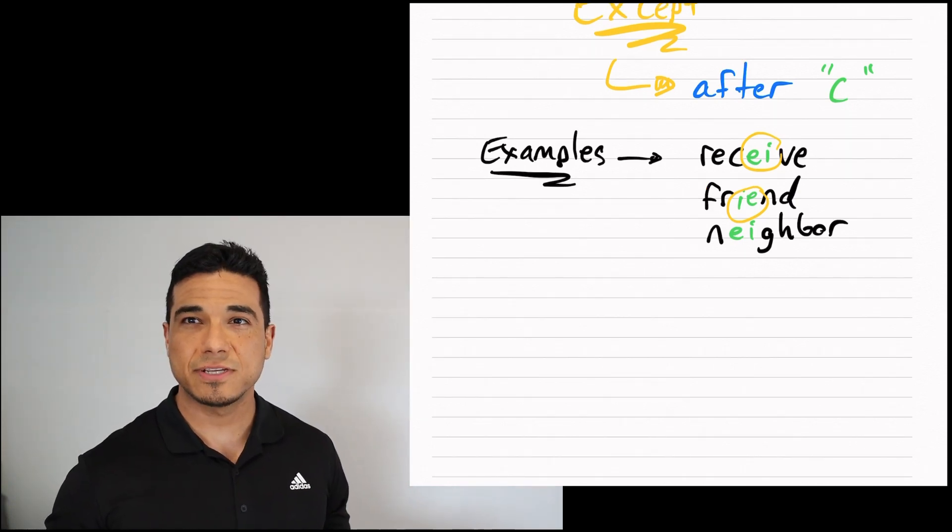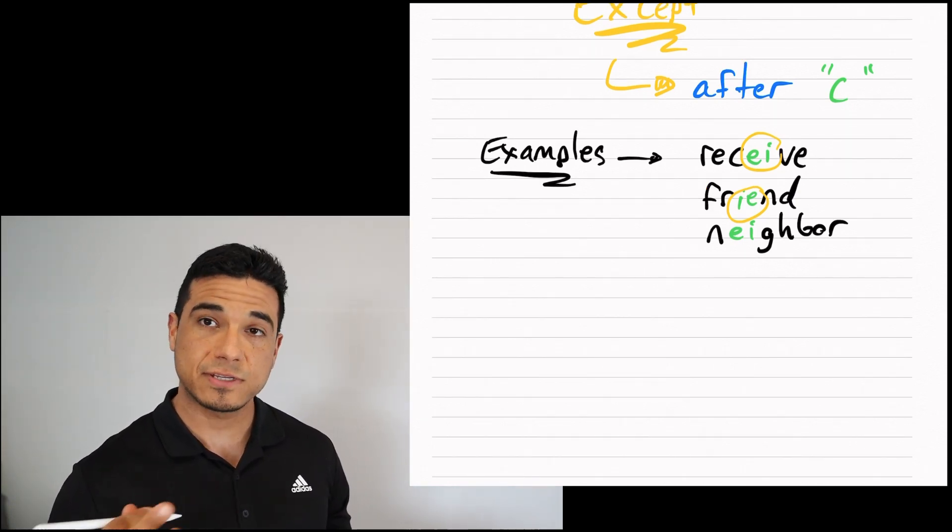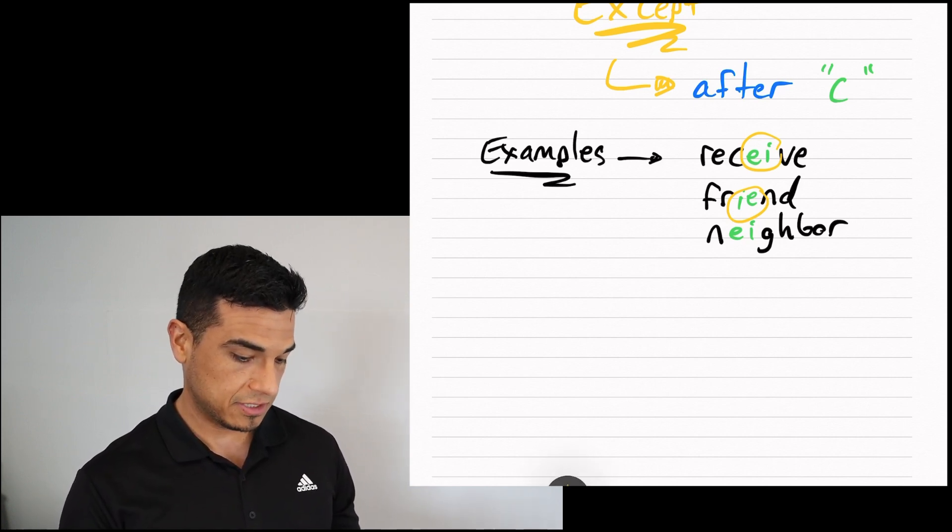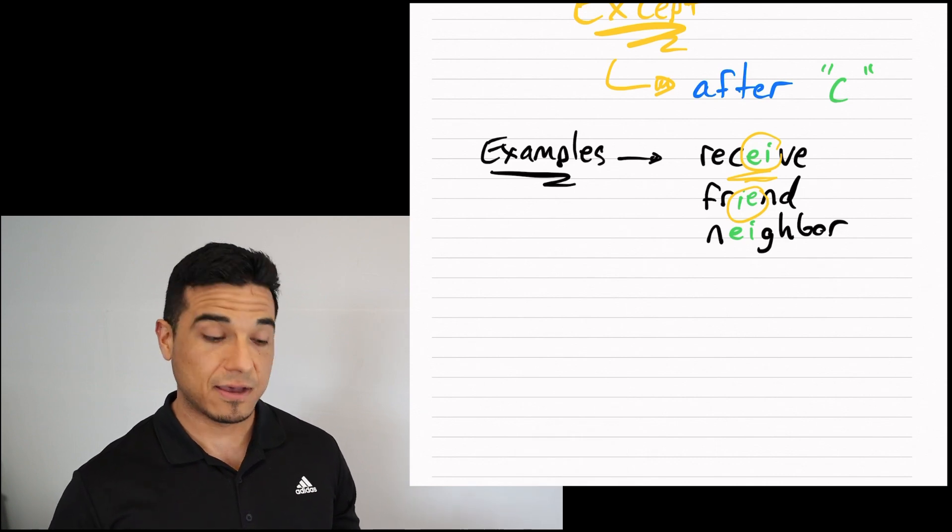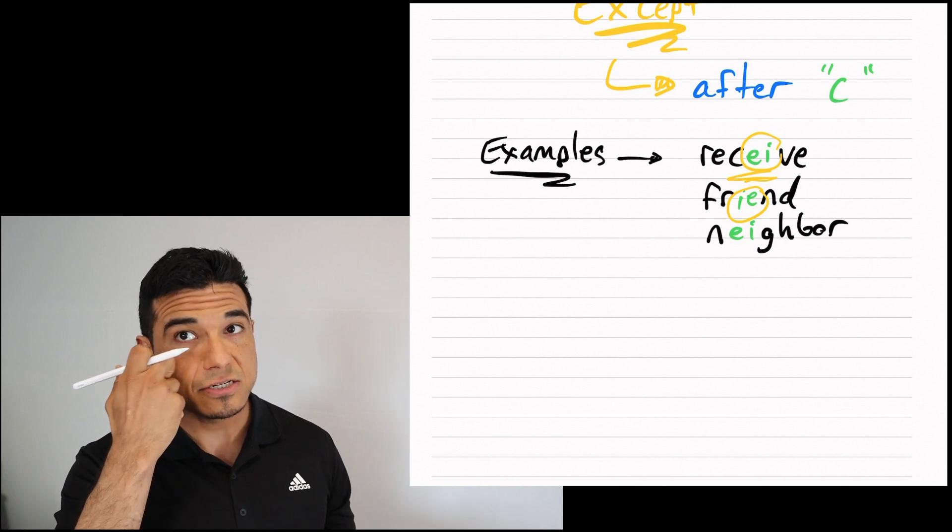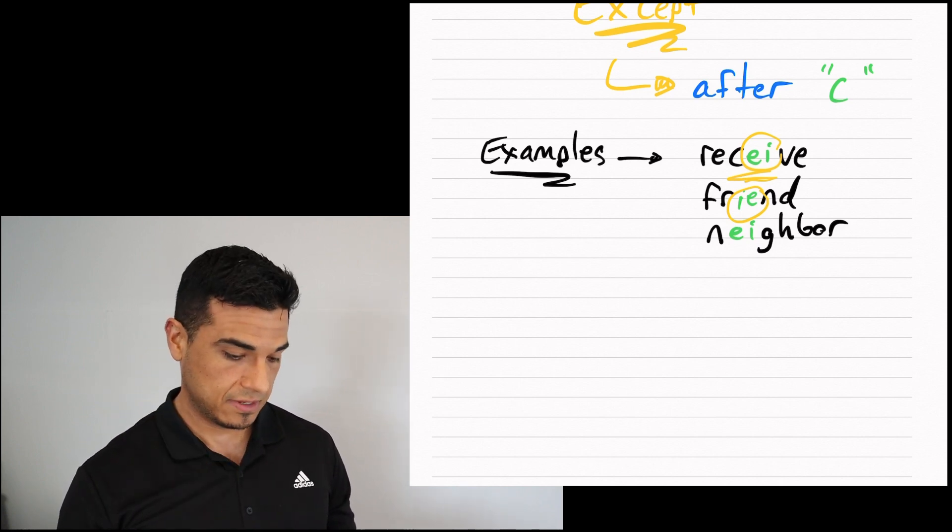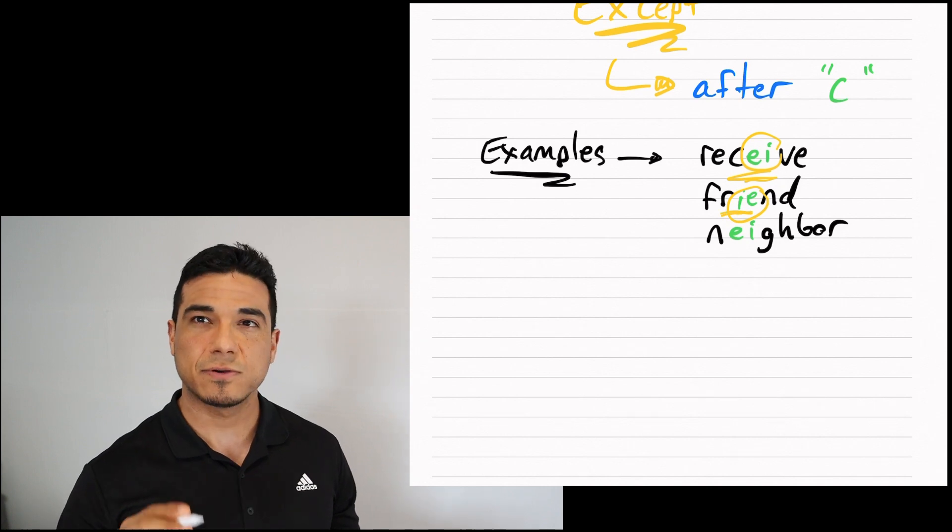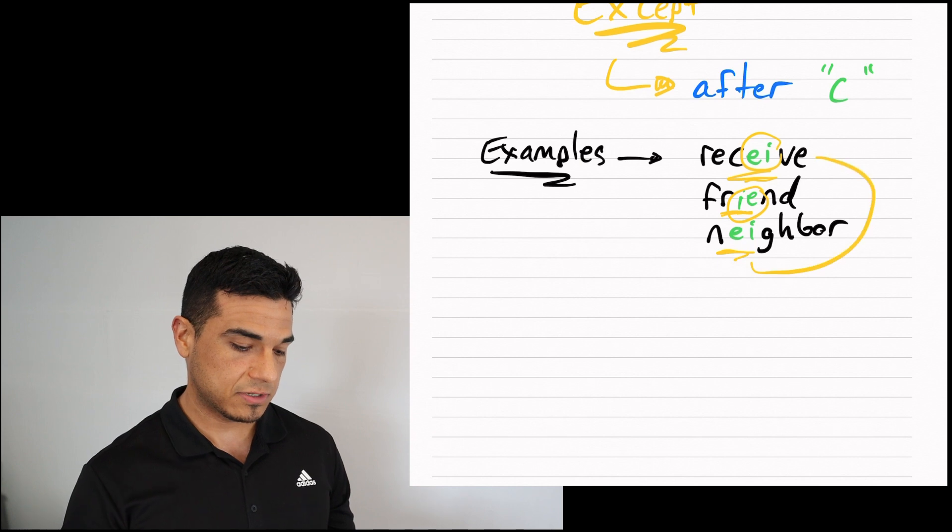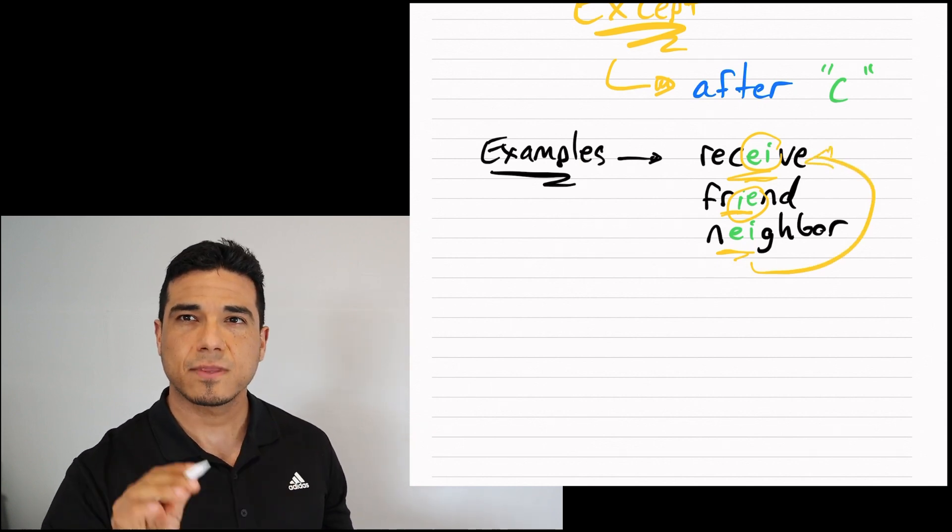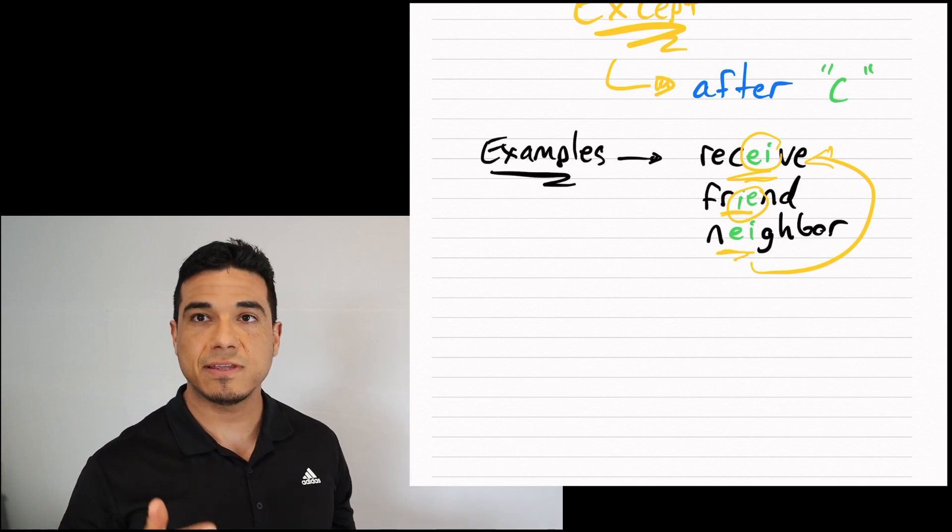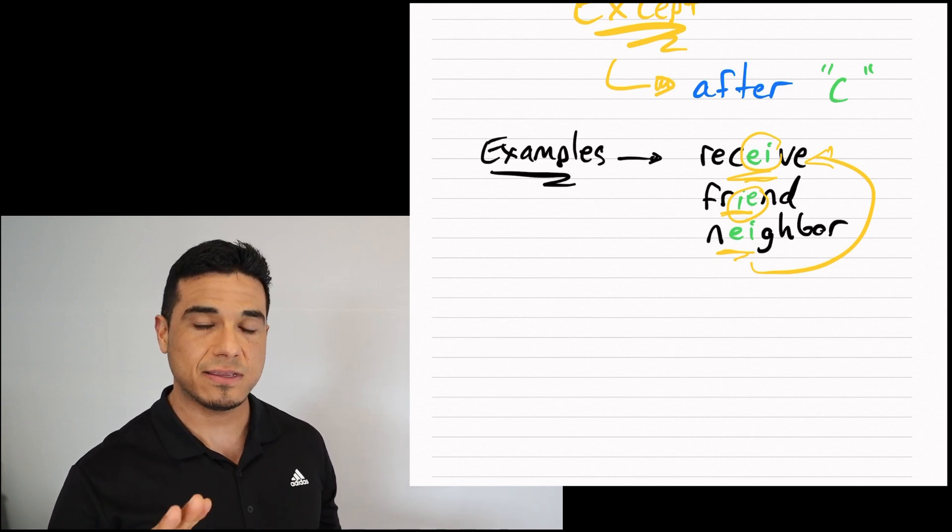You'll notice that in the third example I provide, it doesn't actually adhere or stick to the rule we just discussed. Here I have EI at the top on the word receive, because after C, following the rule, I change IE to EI. Friend. There's no C, so I stick with IE. However, in the word neighbor, there's no letter C that would suggest I would need to switch the orientation of I and E to E and I.